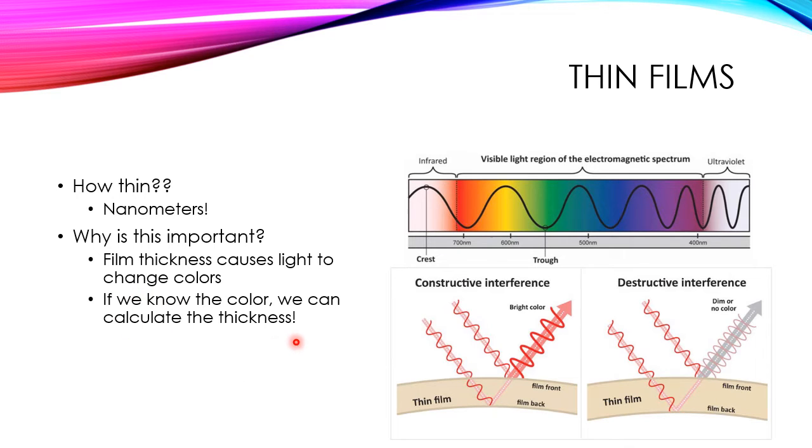If we know the color of the film, we can calculate the thickness, since we know that the light waves are traveling and interacting with the film and with the substrate, which in our case is the paper.